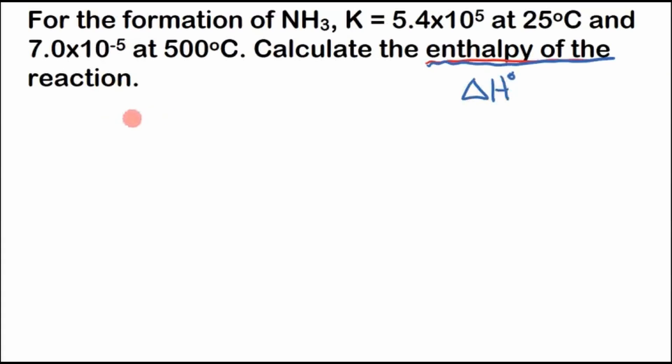We'll set up the Van't Hoff equation again. So ln(K2/K1) equals negative ΔH, which is what we want, over R, ΔH°, times (1/T2 minus 1/T1). Now this is what we want.